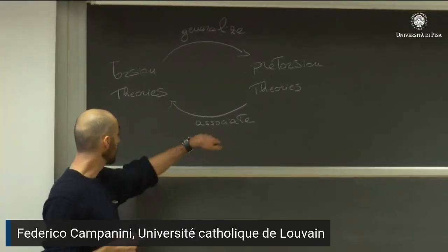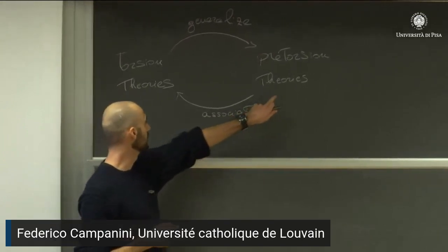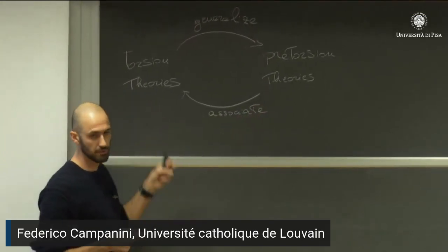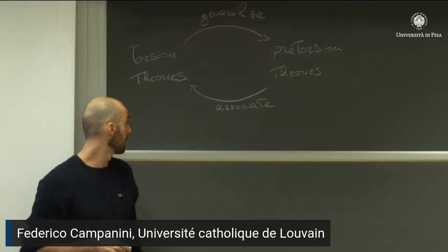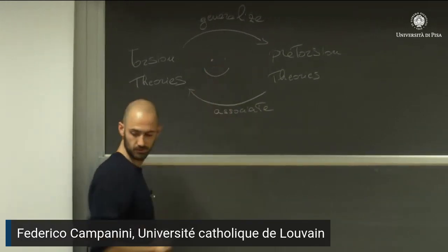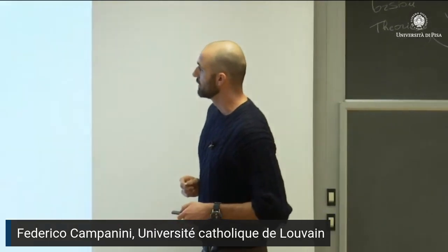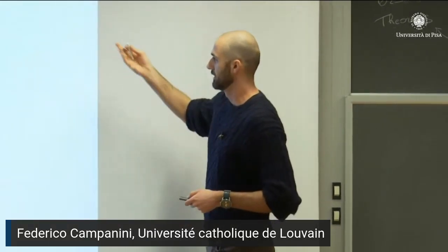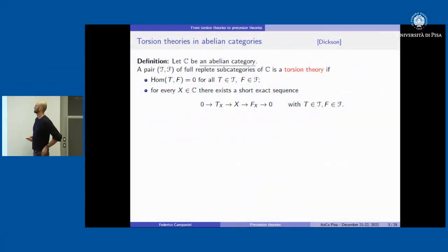Then we go back and try to associate to every pretorsion theory a torsion theory, possibly in a universal way. Well, this is of course not an adjunction. So let me start with the definition of torsion theory, which is well known — it was given by Dickson in 1966.